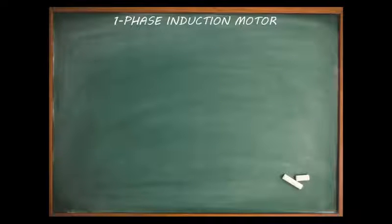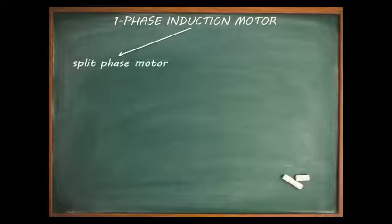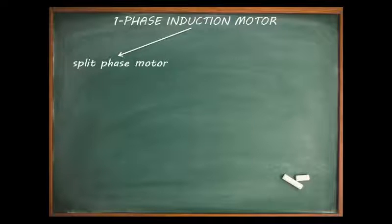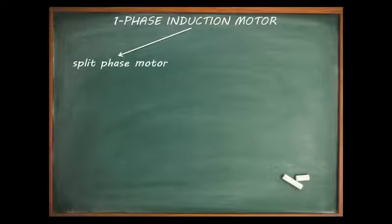Now we will be discussing the single phase induction motor. The first type is the split phase motor. A single phase supply cannot produce a rotating magnetic field; also, two windings connected in parallel to a single source can only produce an alternating magnetic field, but not a rotating magnetic field. However, if an impedance — resistance, inductance, or capacitance — is connected in series with one of these windings, the current may differ in time phase.